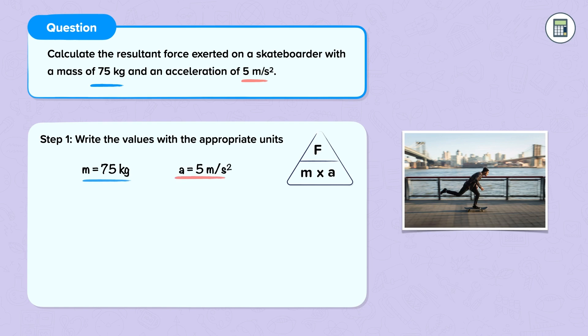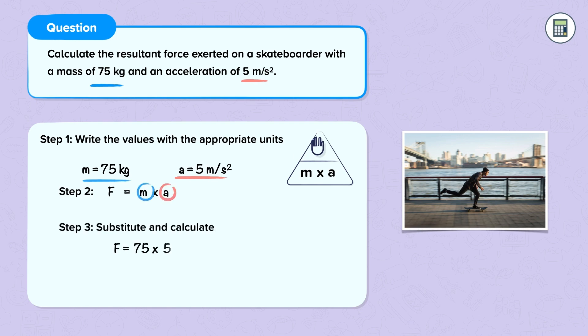Step two: we write our formula. Force is equal to mass times acceleration. We substitute our values and calculate. Force is equal to 75 times 5. That gives us an answer of 375 newtons.